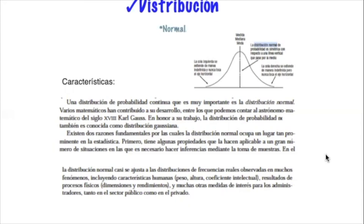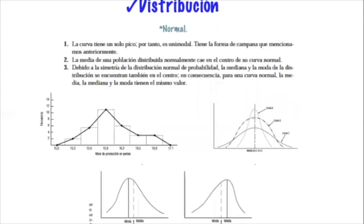La distribución normal ocupa un lugar importante en la estadística. Primero, tiene propiedades que la hacen aplicable a un gran número de situaciones; permite hacer inferencias mediante la toma de muestras. La distribución normal se ajusta a las distribuciones de frecuencias reales observadas en muchos fenómenos, incluyendo el peso, las alturas, el coeficiente intelectual, procesos físicos, dimensiones y rendimientos. Es la distribución que generalmente se enseña en estadística descriptiva y es el punto de partida de la estadística básica.